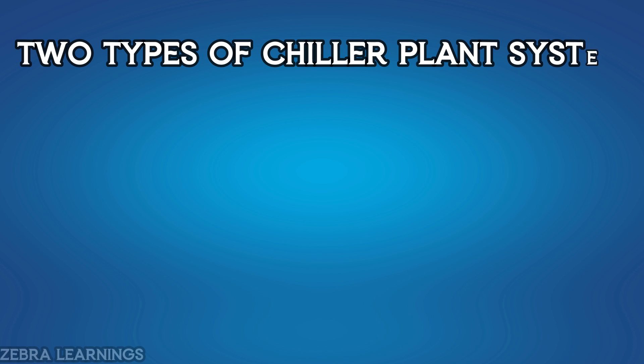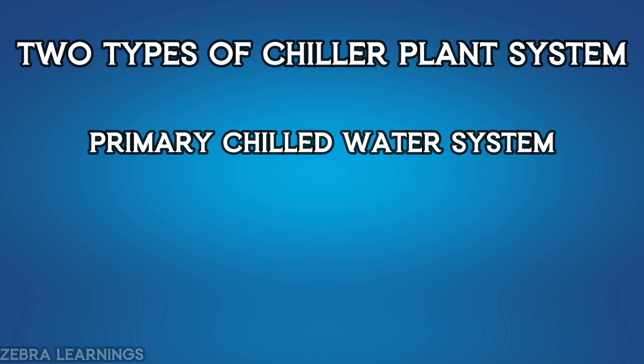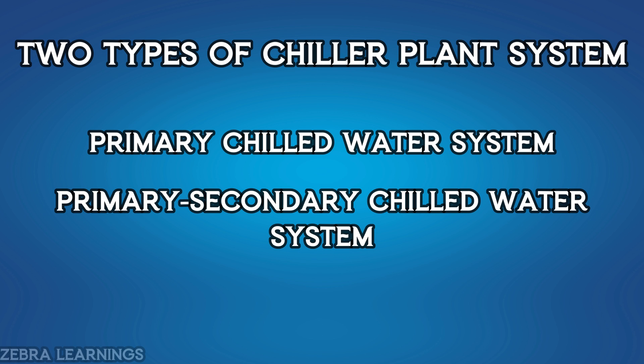There are two types of chiller plant systems. One is the primary chilled water system, and the other is the primary secondary chilled water system.